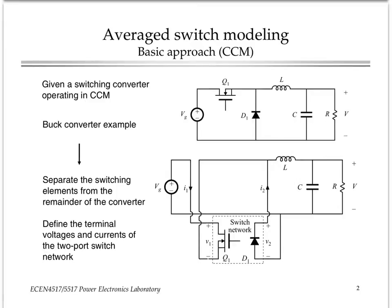The idea behind the average switch modeling is to take the switch components in the converter, pull them out into a switch network, and define the ports of the switch network. In this case, port 1 corresponds to the voltage and current of the transistor Q1, and port 2 is represented by the voltage and current of the diode rectifier.